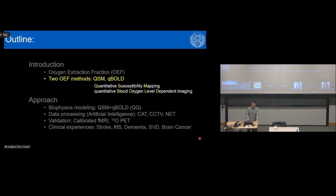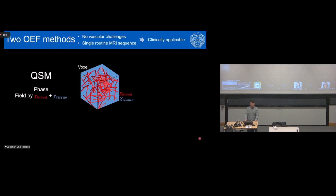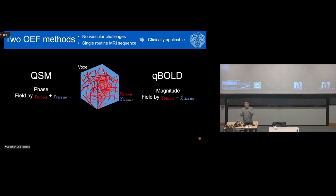In this talk I will focus on two OEF mapping methods: quantitative susceptibility mapping, QSM, and quantitative blood oxygen level-dependent imaging, QBOLT. I focus on these two because neither requires vascular challenges, and both utilize a single routine MRI sequence, making them potentially clinically applicable. QSM utilizes the phase signal driven by the susceptibility difference between blood and surrounding tissue. QBOLT utilizes the magnitude signal decay driven by field variation within a voxel caused by susceptibility differences between blood and surrounding tissue. I'll explain why and how I combine these two methods into a novel biophysics model called QQ.